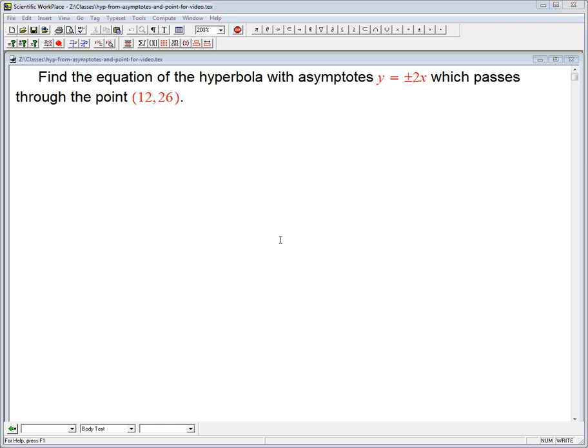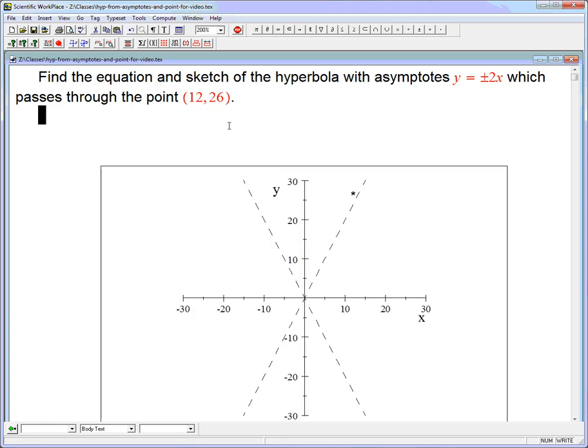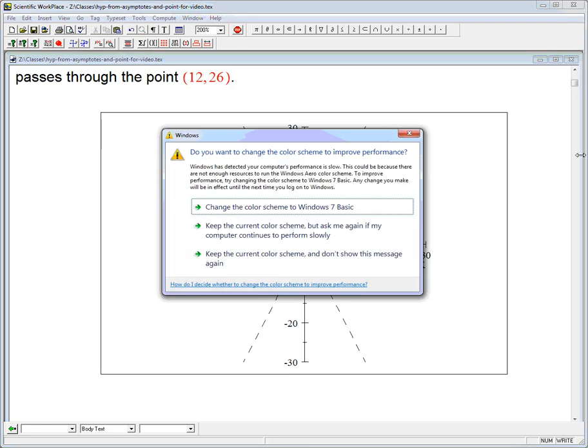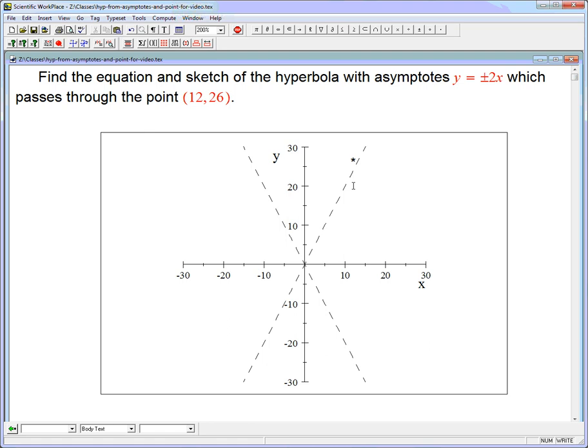So we don't absolutely have to, but it's probably a good idea to find the equation and sketch. I would probably always want you to do that. So let's first just plot that point and sketch the asymptotes. We're going to need a scale that goes out to 30 in y. Let's have it go out to 30 in x. And there's the point.